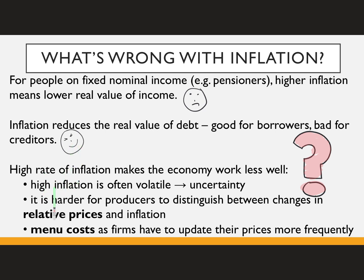There's also the general uncertainty that is wreaked upon everybody when we're uncertain about prices in the future — that's pretty massive for a free market economy. Uncertainty makes decisions much harder and creates a drain on the economy, making it harder to figure out relative prices. And then there are menu costs — you spend a lot of time updating prices more frequently, reprinting menus literally, paying more attention to prices, which is a drain on productivity.